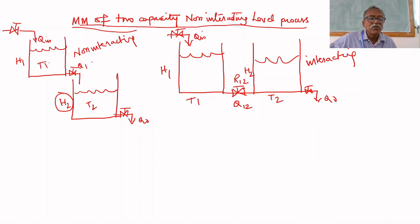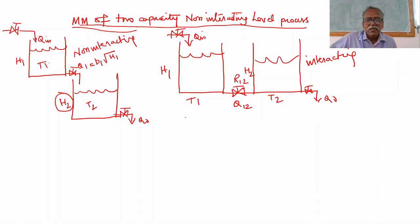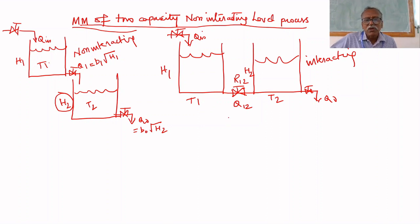What is the relation for Q1? Q1 equals B1 times root H1. The downstream pressure is atmospheric pressure, that is why root H1. Here also, this is B naught times square root of H2 for Q naught. But here the outlet pressure is not atmospheric pressure — it is the pressure in tank 2 — that is why Q12 equals B12 times square root of H1 minus H2.